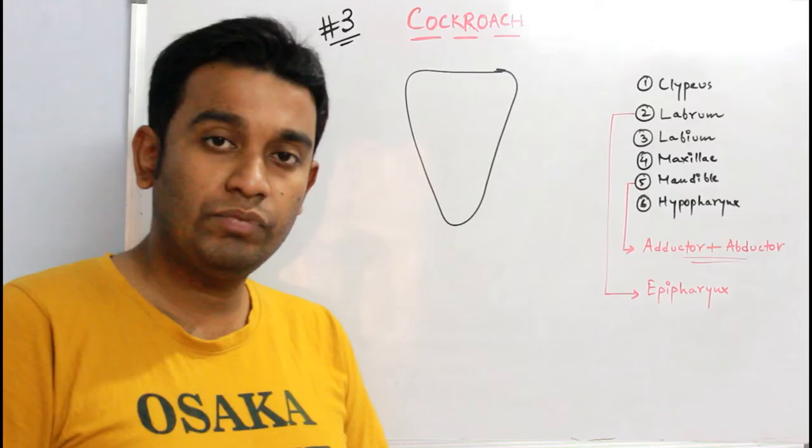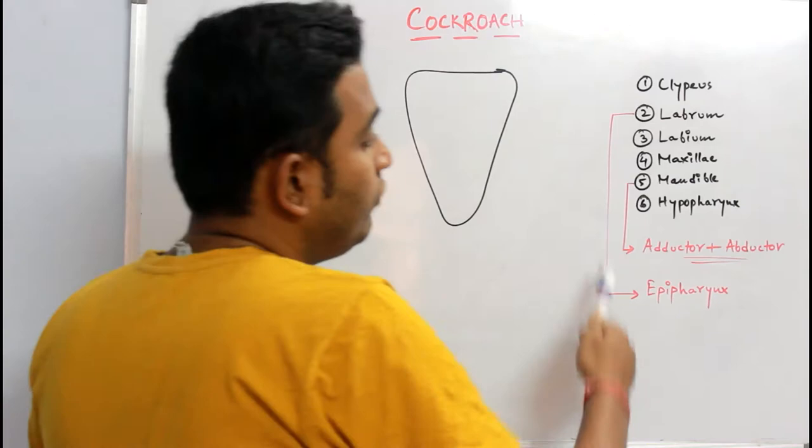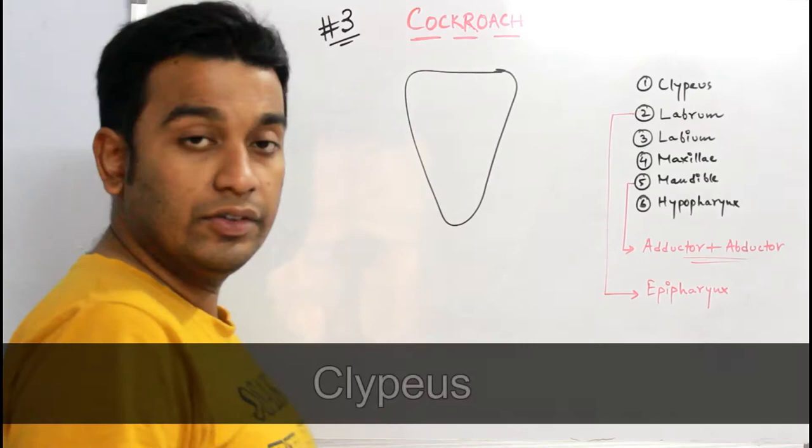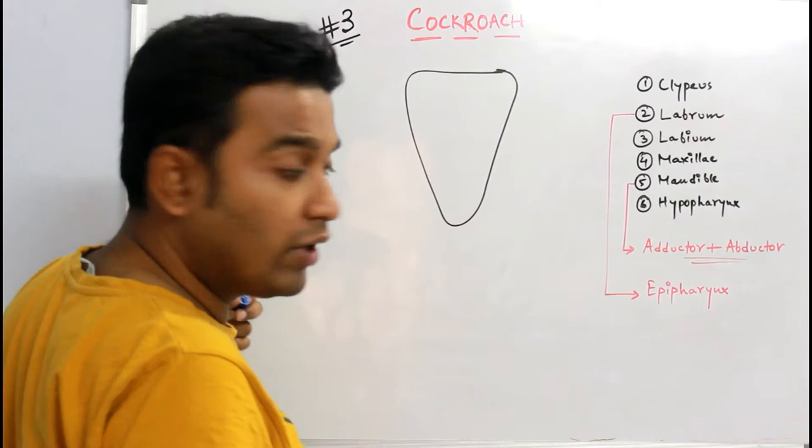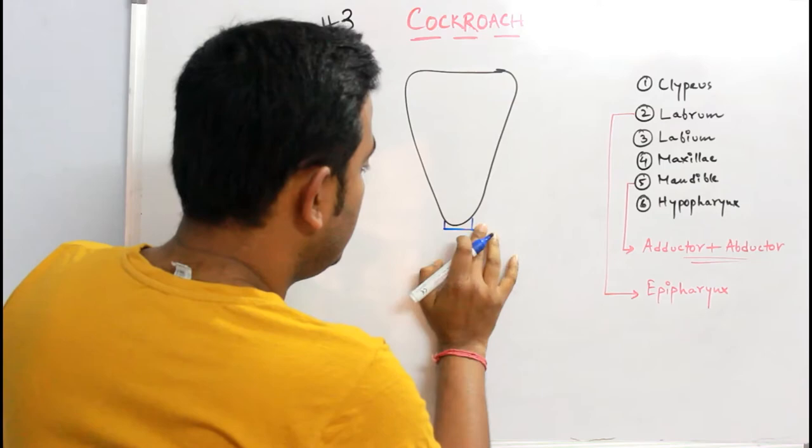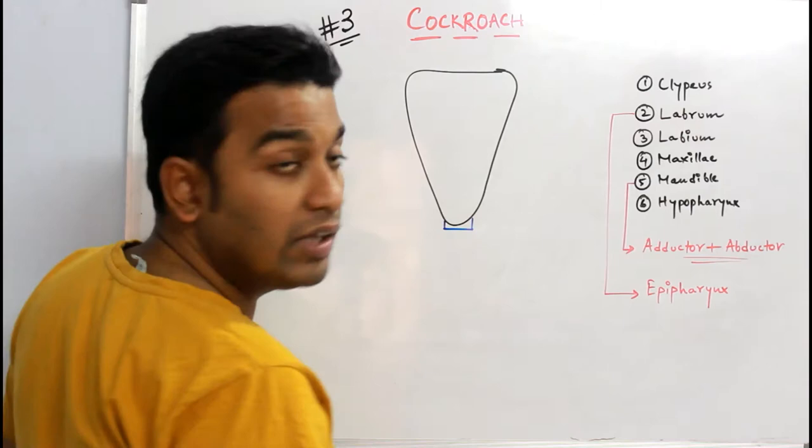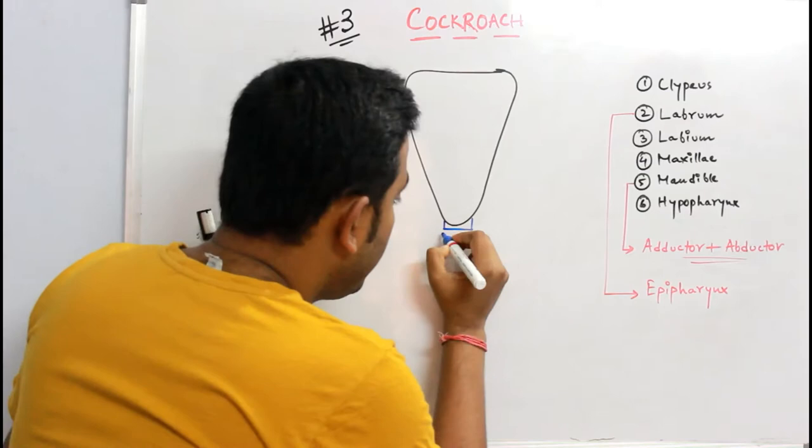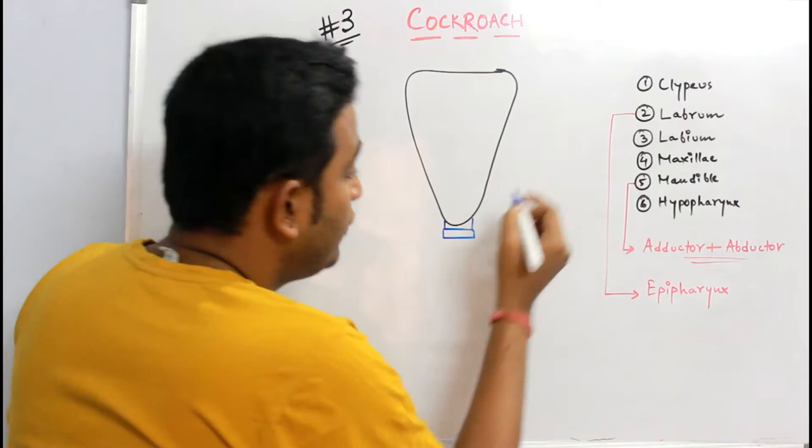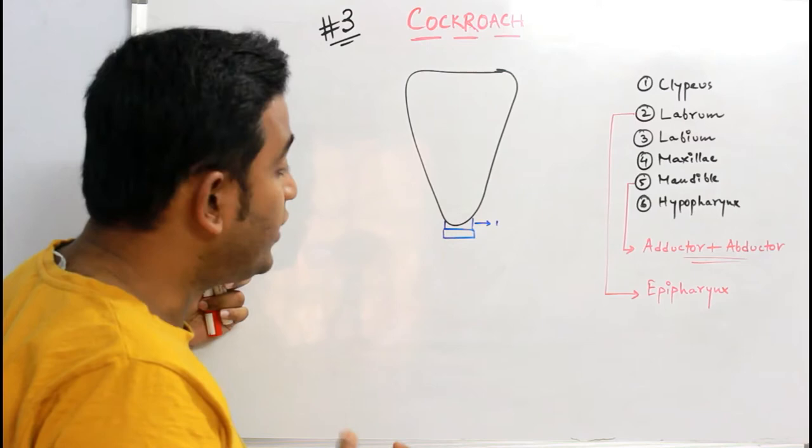Now try to understand, I've written something in sequence and we'll be talking about all the parts one after another. So first I start with the clypeus. It's not so important but still, clypeus is a chitinous plate-like structure which is present at this region. If this is your clypeus, this clypeus will help to hold the labrum to the head of the cockroach.